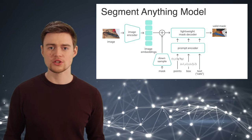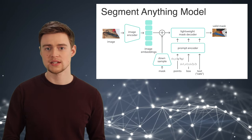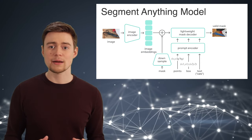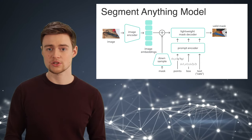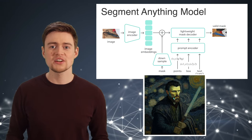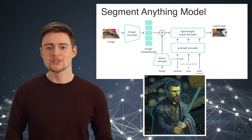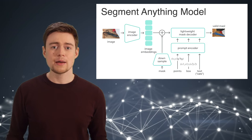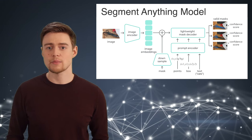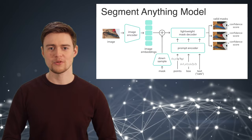If we want to use SAM as a general tool for segmentation, it must be able to resolve ambiguity in prompts. Similar to ChatGPT, which can write unique poems about anything you ask for, SAM must give a reasonable segmentation from any prompt. For example, when selecting a point on an image, it must consider whether you want a segmentation of the face or the whole body. To address this ambiguity, SAM predicts multiple valid masks with a confidence score for each. Using this method and other modeling choices, we can solve downstream tasks by simply engineering appropriate prompts.